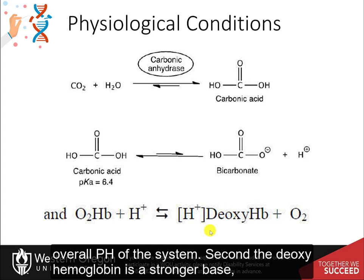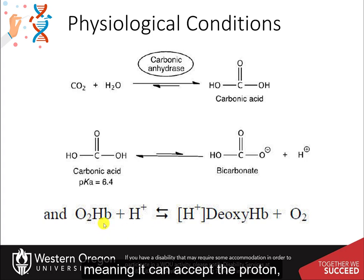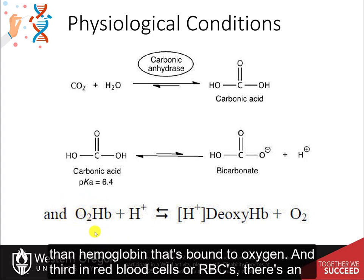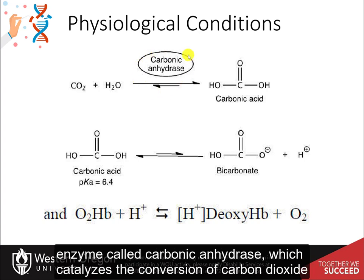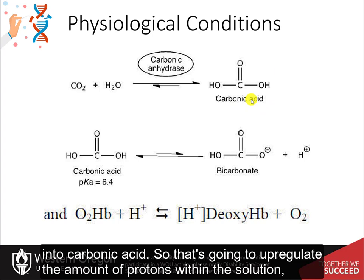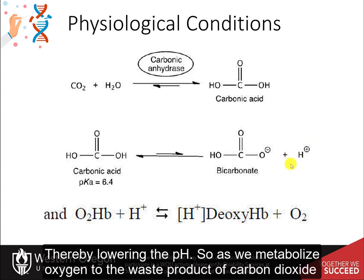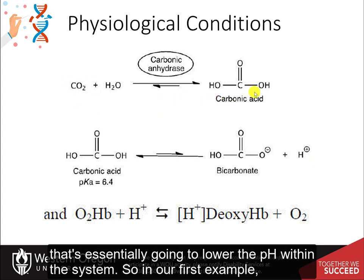Second, deoxyhemoglobin is a stronger base — it can accept a proton compared to oxygen-bound hemoglobin. And third, in red blood cells, an enzyme called carbonic anhydrase catalyzes the conversion of carbon dioxide into carbonic acid, which increases the number of protons in solution, thereby lowering the pH. So as we metabolize oxygen to the waste product carbon dioxide, this essentially lowers the pH within the system.